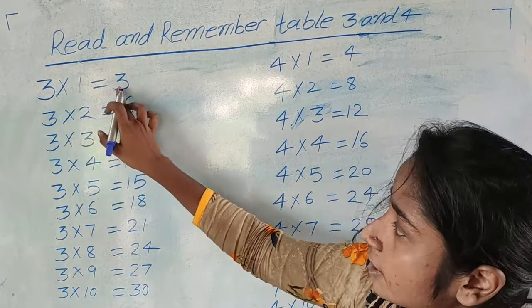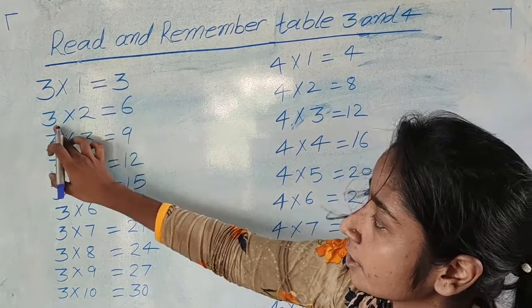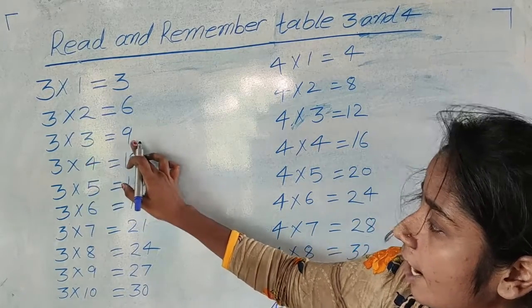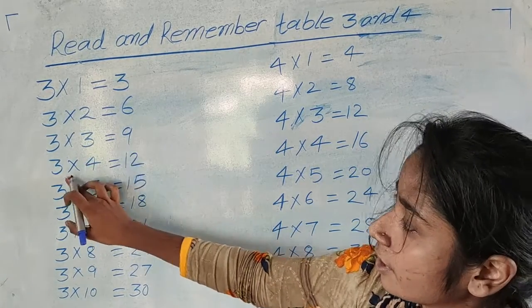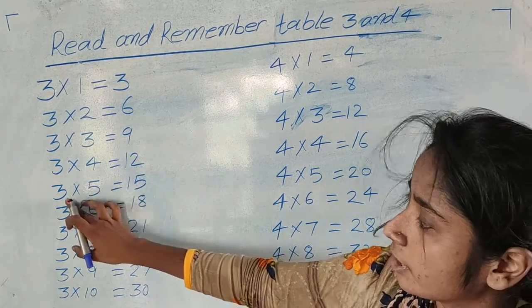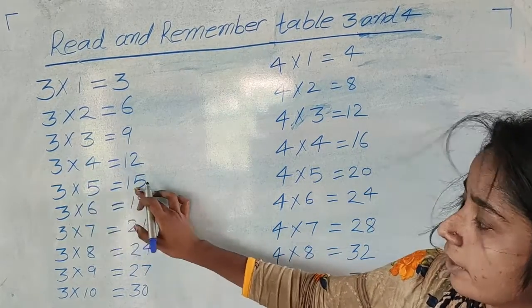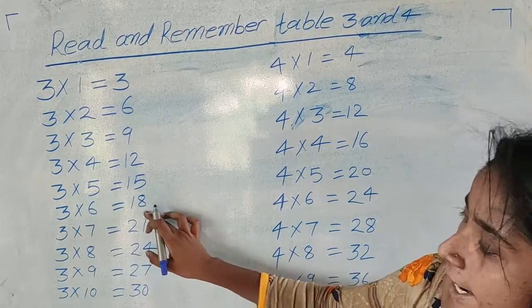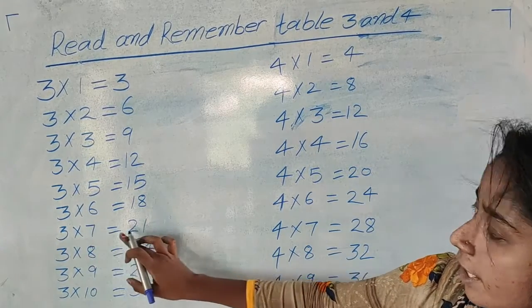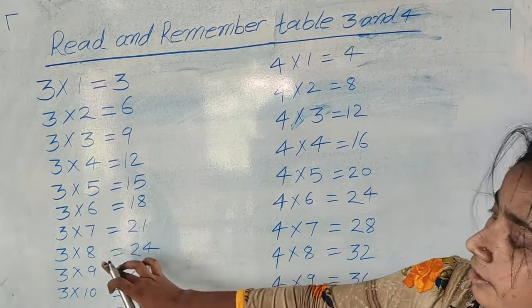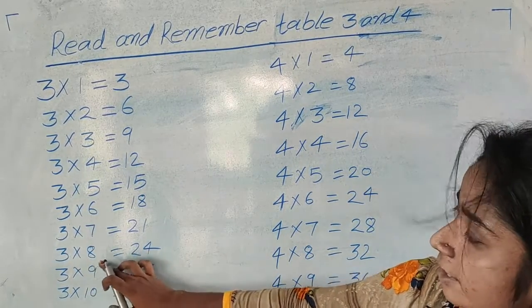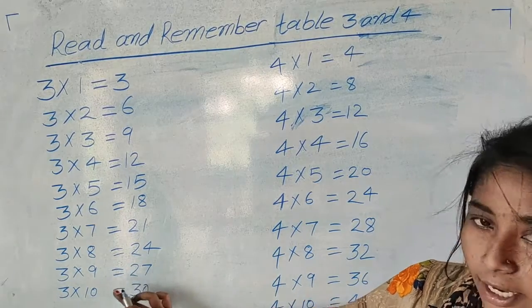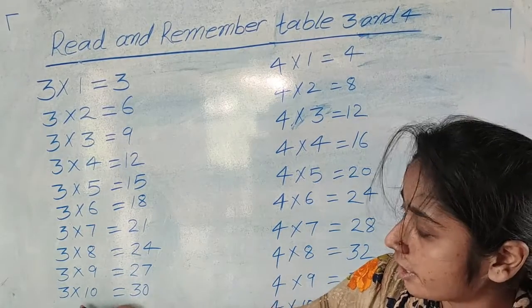3 × 1 = 3, 3 × 2 = 6, 3 × 3 = 9, 3 × 4 = 12, 3 × 5 = 15, 3 × 6 = 18, 3 × 7 = 21, 3 × 8 = 24, 3 × 9 = 27, 3 × 10 = 30.